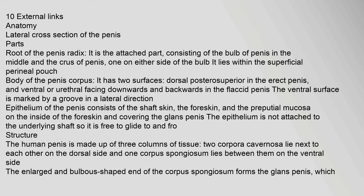The ventral surface is marked by a groove in a lateral direction. The epithelium of the penis consists of the shaft skin, the foreskin, and the preputial mucosa on the inside of the foreskin and covering the glans penis. The epithelium is not attached to the underlying shaft, so it is free to glide to and fro.